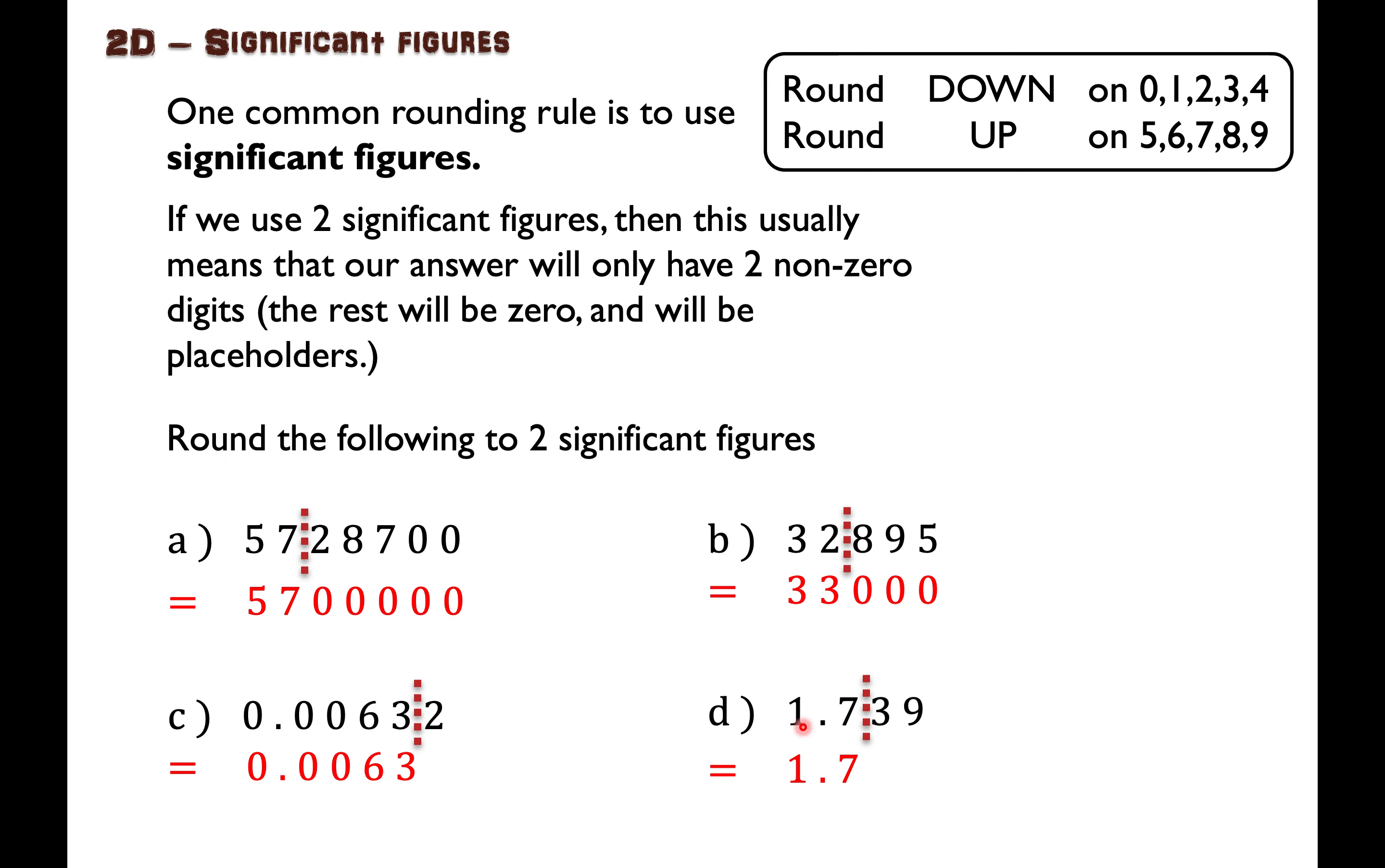That's not so bad, is it? That is how you round to two significant figures. Obviously if it's three significant figures then you would include the first significant digit and two of them after. Alright, this is exercise 2d by the way. And yeah, hope you got something out of it.